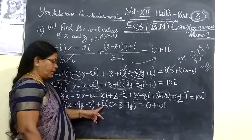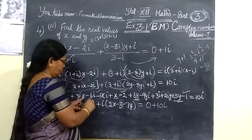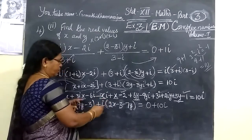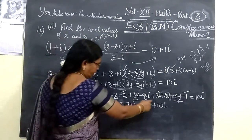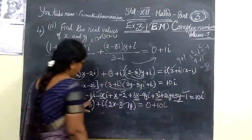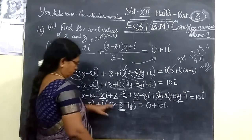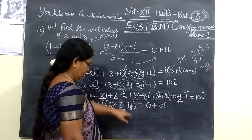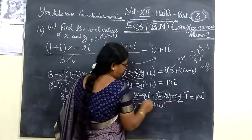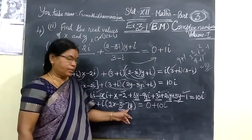In the imaginary part, taking i outside, you have 3x minus 1x giving 2x. Then minus 3, plus 3y, minus 6, plus 3 giving minus 3. Then for the y terms: 2y minus 9y giving minus 7y. So the imaginary part is 2x minus 7y minus 3.